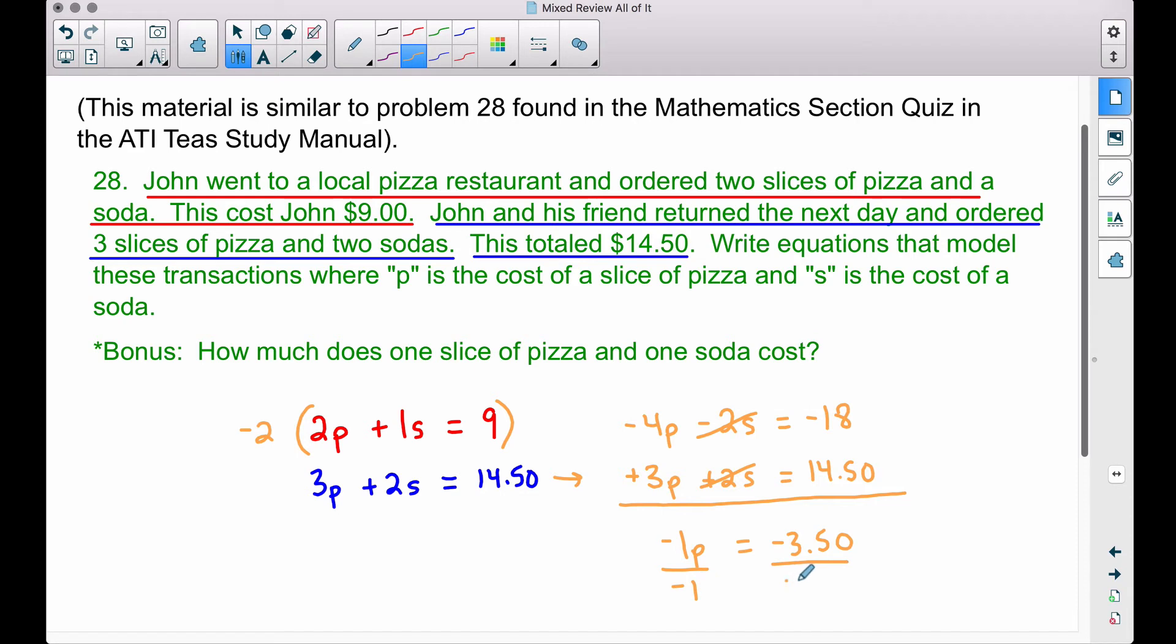This is the price of a single slice of pizza. Now sure, you could guess and check. Good luck, because sometimes guessing and checking, trying to find a P that works for both of these equations and an S that works for both of these equations, that can be kind of difficult. But now what we have done using what's called the elimination method here, we've solved for P. So we now know a slice of pizza is three dollars and fifty cents.